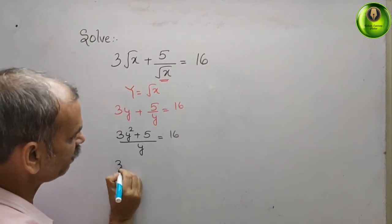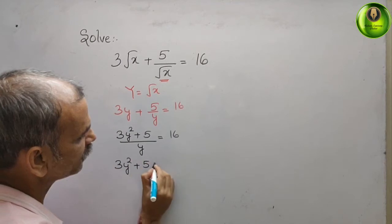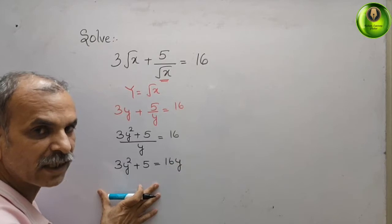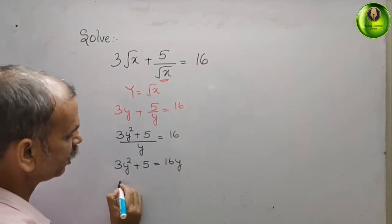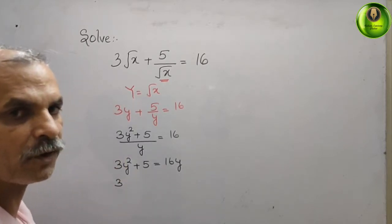You will get 3y square plus 5, that gives you 16y. Now bring this 16y to your left side. It will be minus 16y.